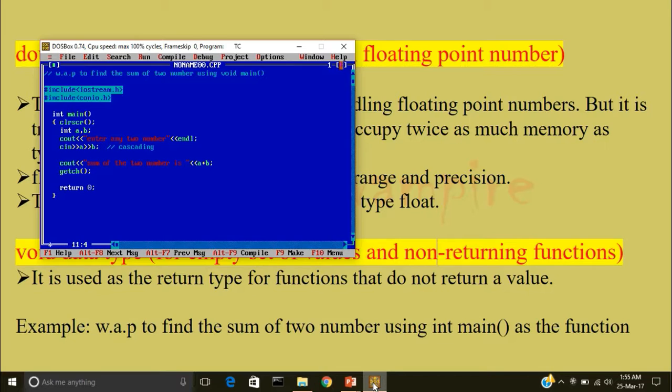Now what does this statement mean: int main parenthesis. This means that this main function would return a variable with a data type of integer. Now in this statement return 0, this means that this function will not return a value.